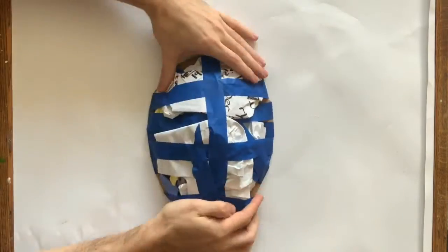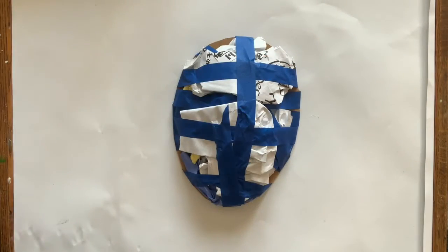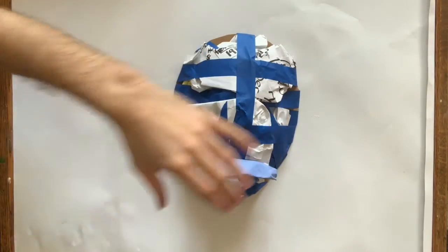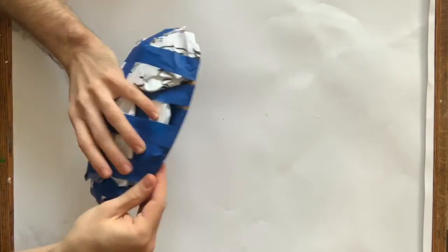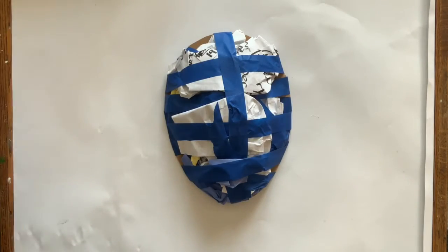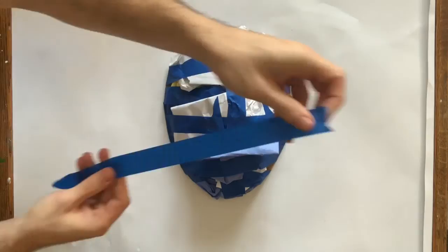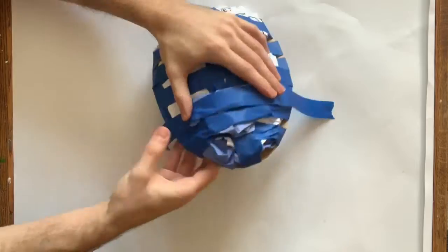And if I want to add any more features that come out from the face shape, I'll add those on my next round of paper mache. But for now, I'm just going to add my first layer of paper mache right on top of this built up form.